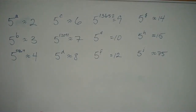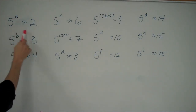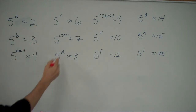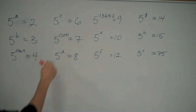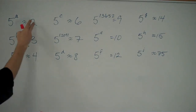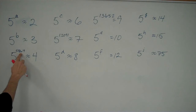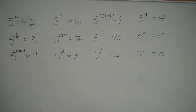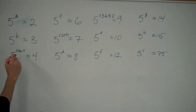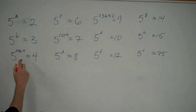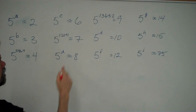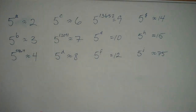In this video, we have 5 to a whole bunch of exponents. 5 to the a is 2, 5 to the b is 3. You'll notice all the equal signs here are the wavy types, which means it's about 2, it's about 3. 5 to the 0.8614 is about 4 — you can grab a calculator and verify that. We have three values that are known: 4, 7, and 9, and we are left to fill in all the blanks.